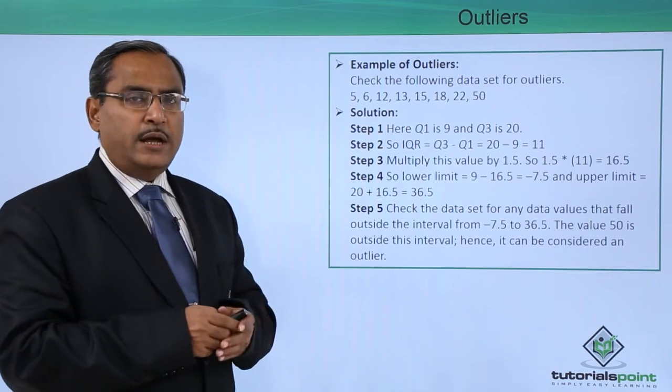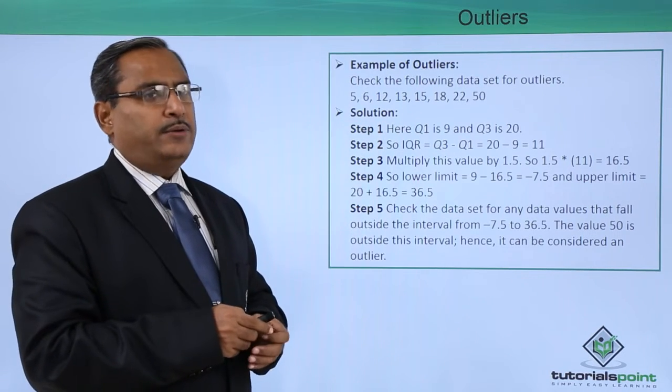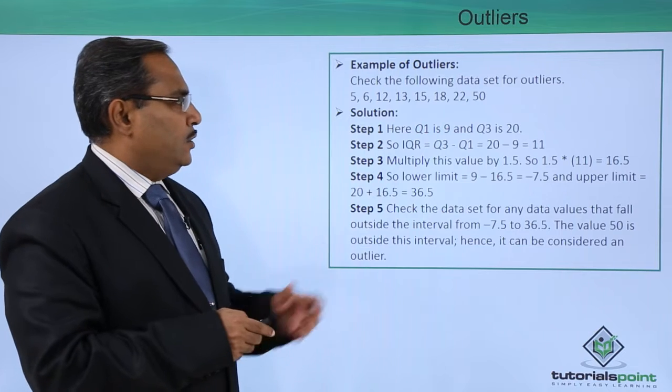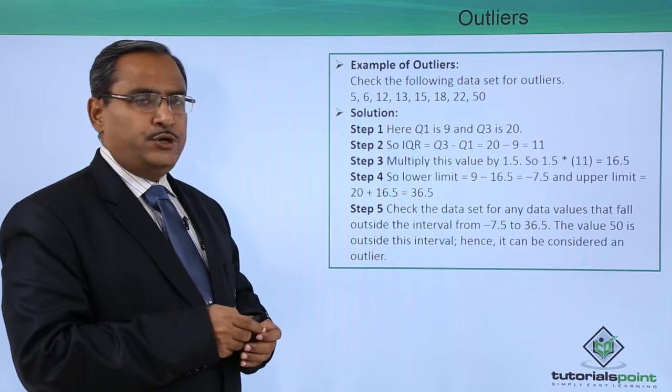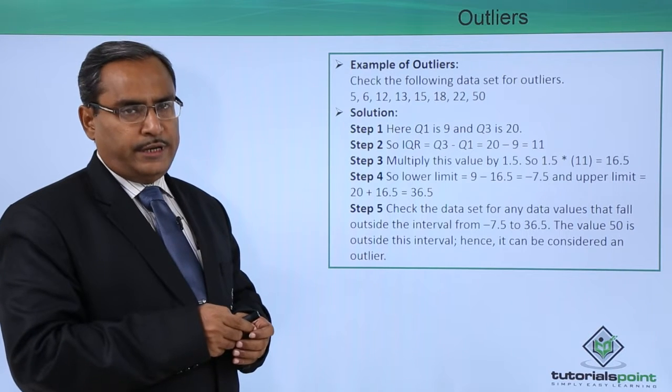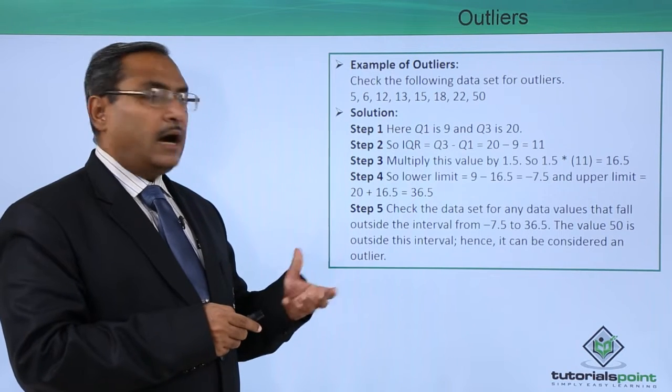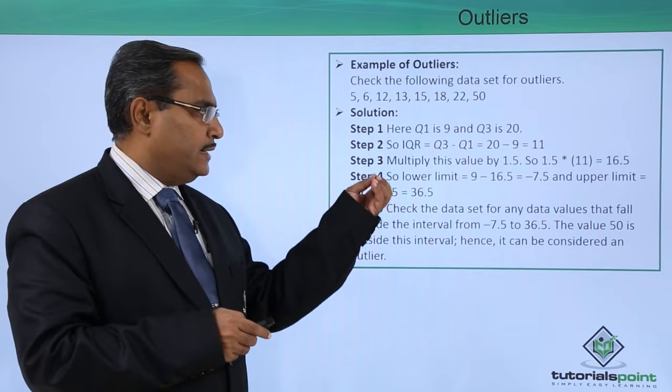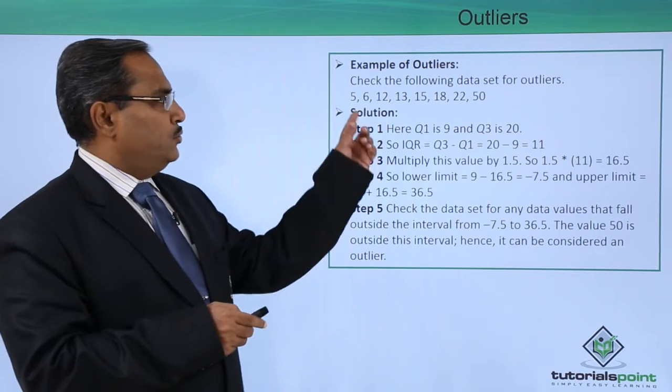Here we are having a set of data. How many data are we having here? Here we are having eight data. At first, we are calculating Q1, which equals 9, and Q3, which equals 20. Now questions might be asked: how has Q1 become 9 and Q3 become 20?